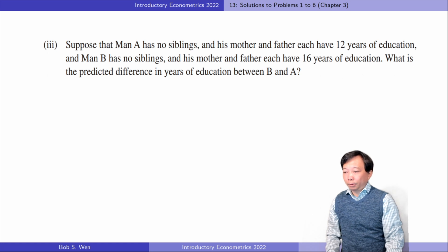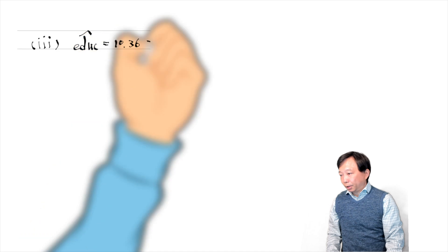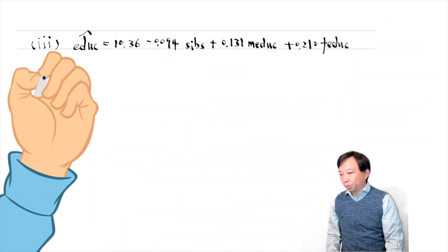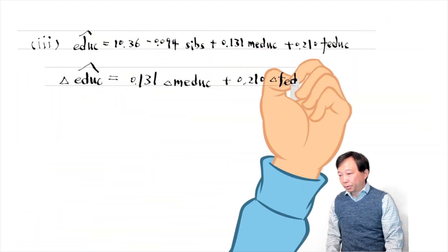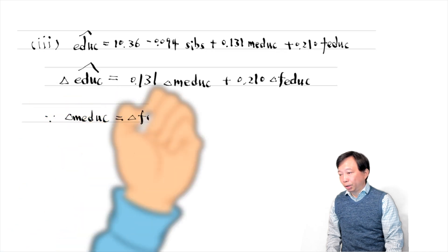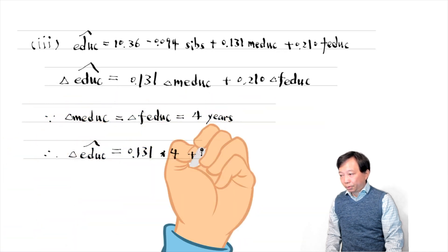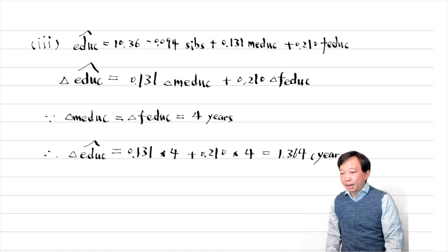For the third question, holding the number of siblings fixed, the difference in the years of schooling comes from the difference in the parents' years of education. The predicted difference in years of schooling between A and B is 1.364 years.